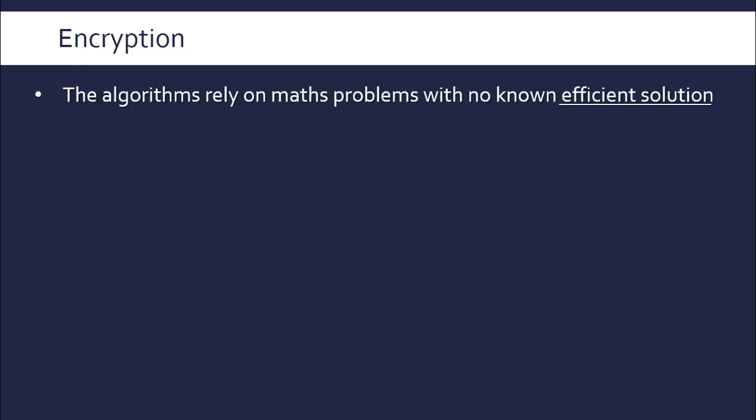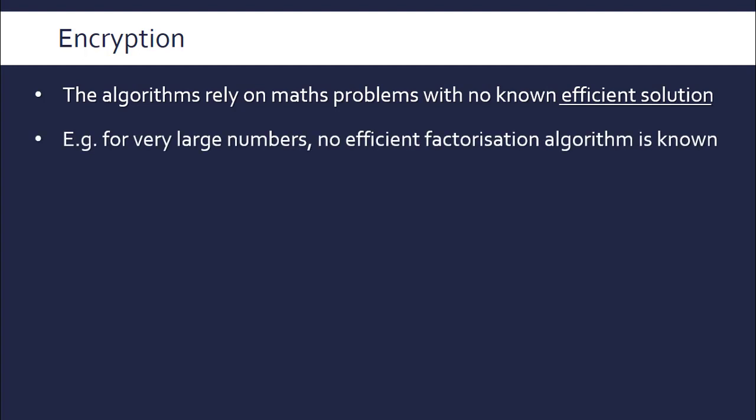The actual algorithms at the heart of this rely on very complicated maths problems — crucially, problems with no known efficient solution. They might be solvable by brute force, perhaps by trying every combination in a million or a billion years, but there's no feasible solution, which is perfect because you don't want someone to break the encryption without knowing the key. One common problem utilised by algorithms such as RSA is that factorisation is actually very difficult. Factorisation — decomposing a number into its factors — seems easy, for example 16 = 2×8 or 4×4, but it's very hard for computers, especially with very large numbers.